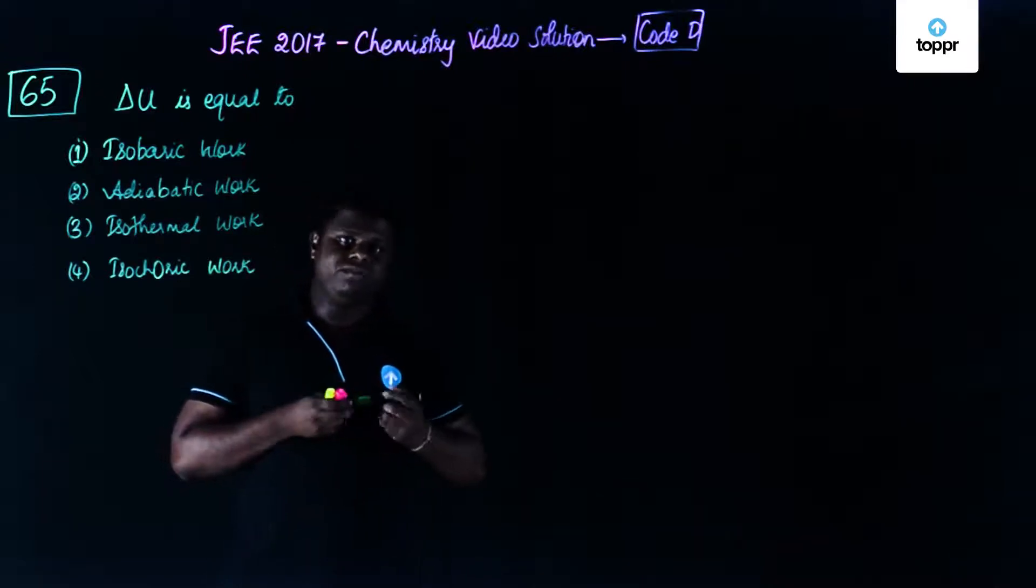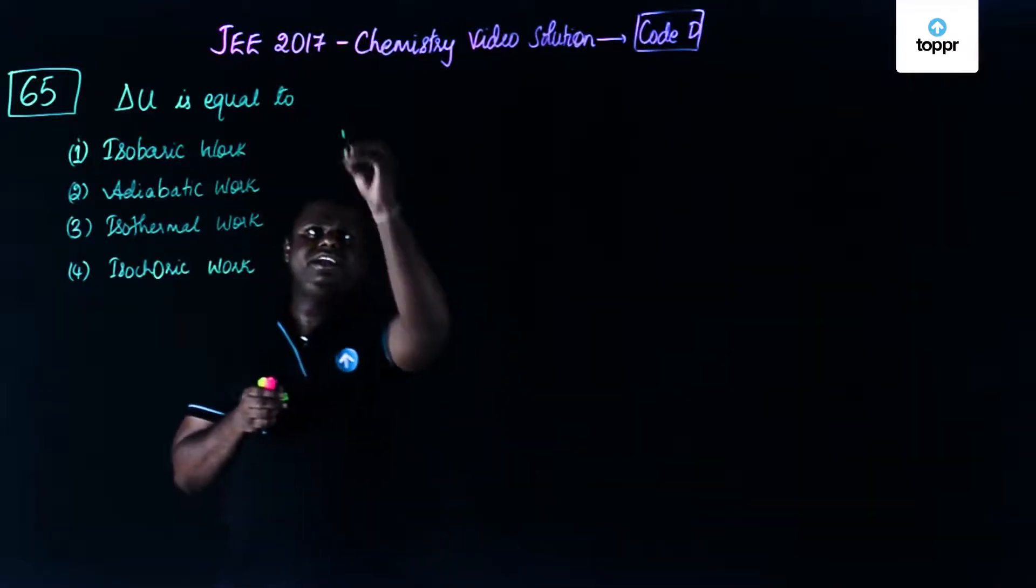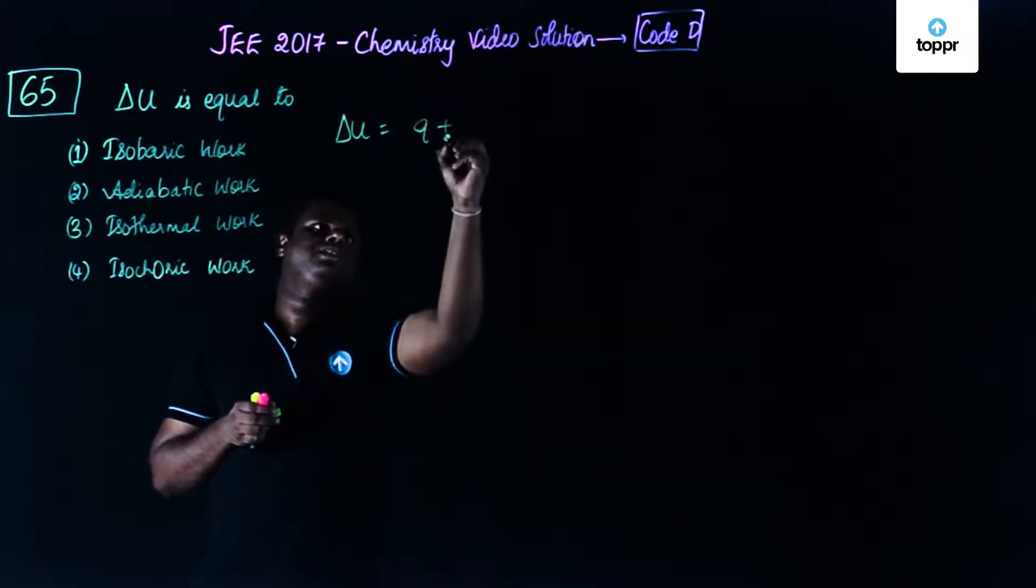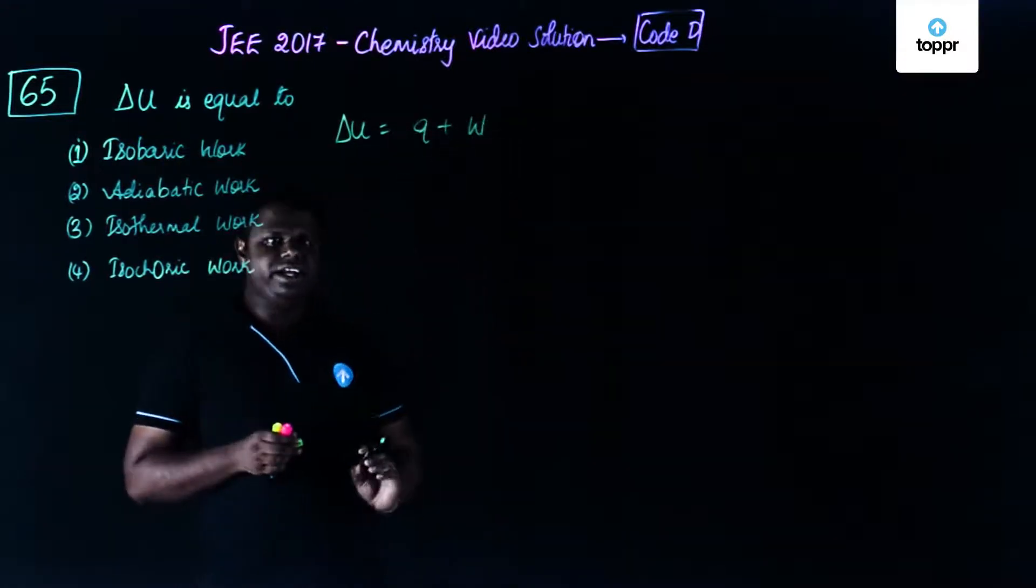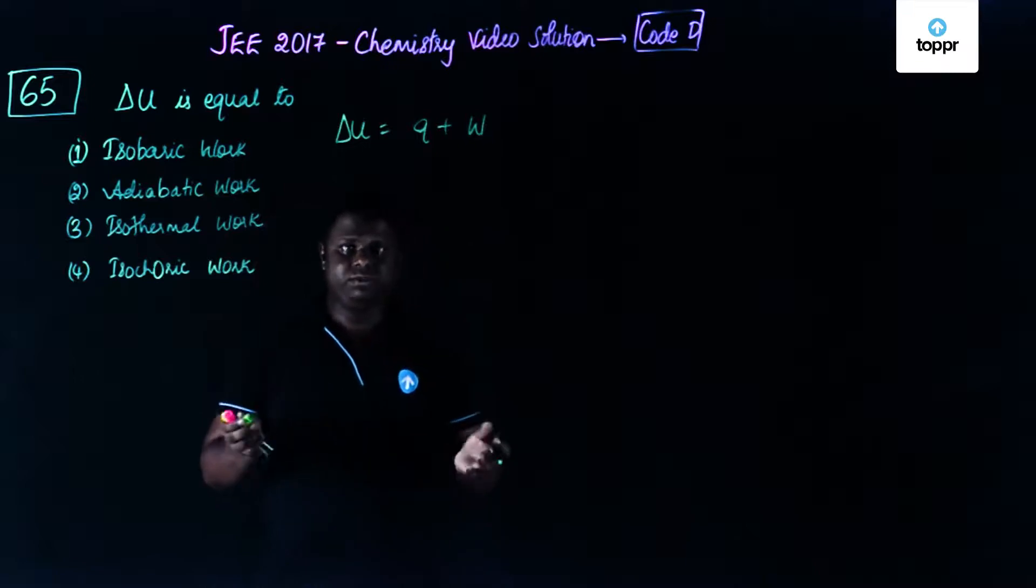What does the law of thermodynamics say? You have delta U equal to Q plus W. Heat content plus external work done, that's what you could say.